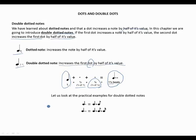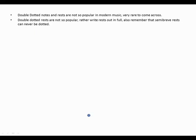Let's look at a practical example for double dotted notes. A double dotted crotchet looks like a crotchet added with a quaver and a semi-quaver. The first dot represents a quaver — crotchet plus quaver — and the second dot, which is half of the first dot, would be a semi-quaver.